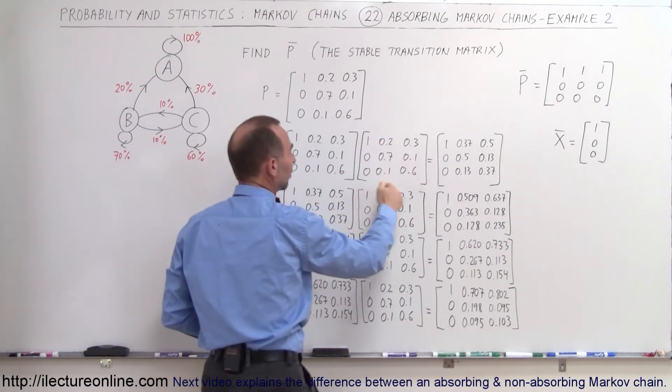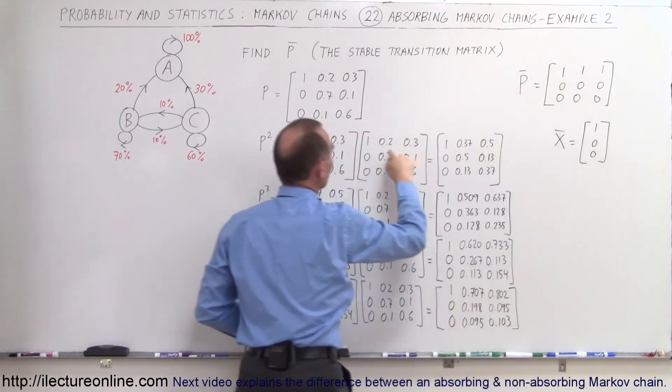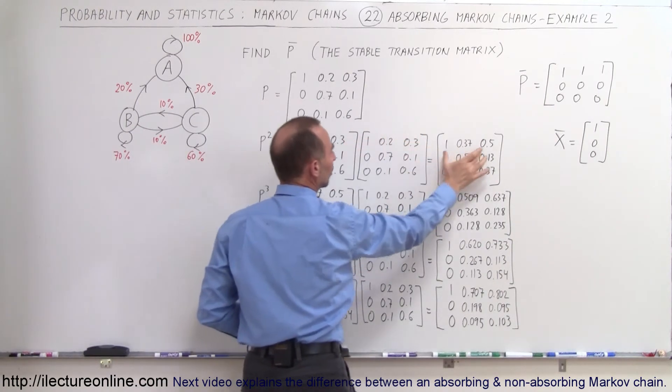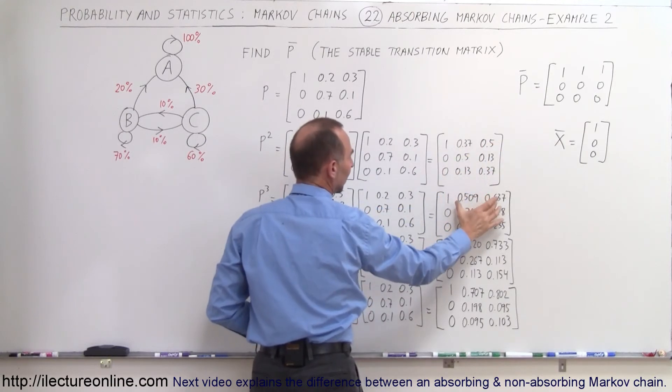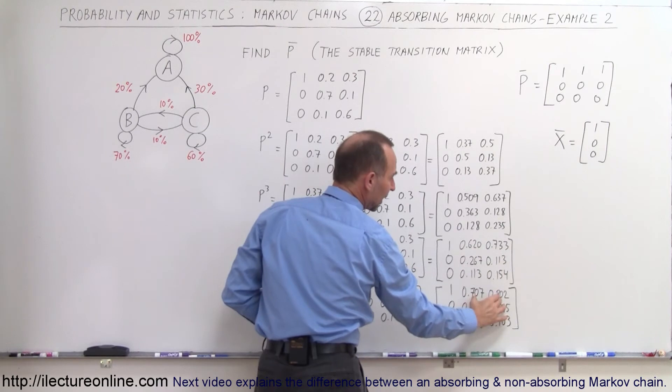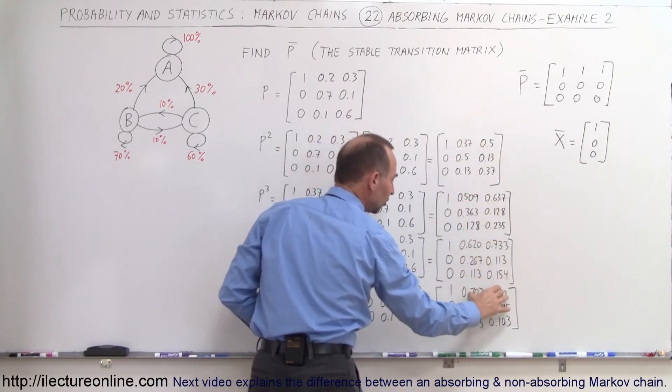Well notice that at the beginning we do have a 1.0 here like we have over here, but we have a 0.2 and a 0.3 at the top here, and notice after the first multiplication they become bigger numbers, then they become bigger again, they become bigger again. You can see that over time they seem to be approaching the number 1 and 1 over here.